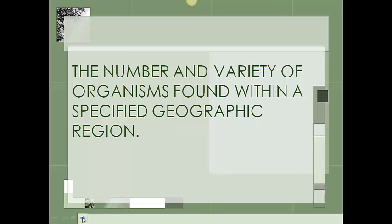Bio, as you know, has something to do with life or living organisms. Diversity has to do with differences amongst those living organisms. So we put those together and we get this definition for biodiversity, which is the number and variety of organisms — how many organisms are found and the different types of organisms found within a specified geographic region. So biodiversity isn't just having a lot of organisms, but also that they are of different types.